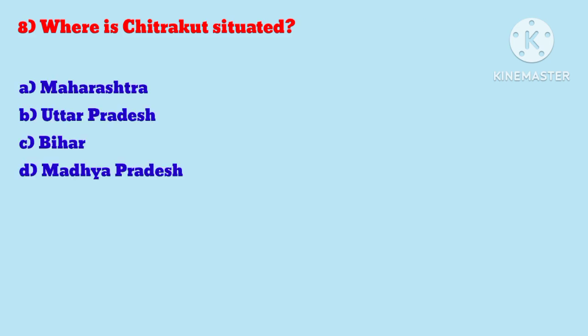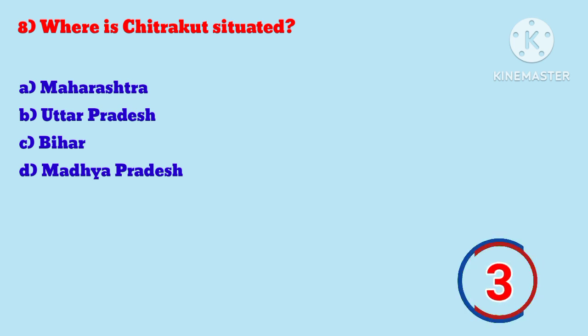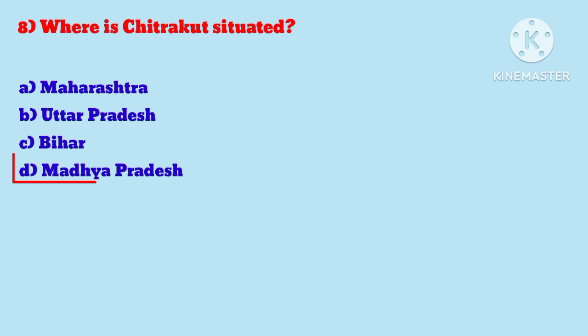Question 8: Where is Chitrakoot situated? — Answer is Madhya Pradesh.